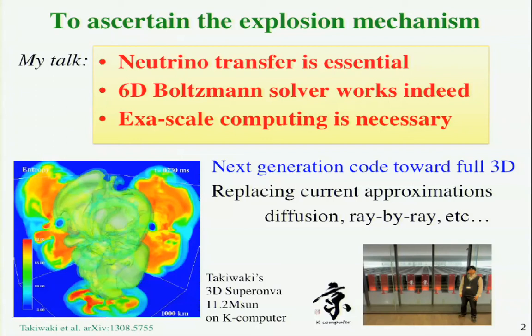I'm talking about the next generation code toward full 3D calculation by replacing the current approximations in simulation. This is the simulation of the 3D supernova. This is done by Takiwaki, my colleague. And even in the latest simulations, we have some approximations in the neutrino transfer. So I want to replace and evaluate the effects on supernovae.